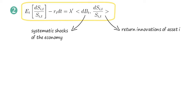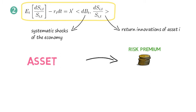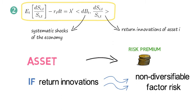So said differently, we want to prove that an asset pays only a risk premium in expectation if its return innovations co-move with non-diversifiable factor risk.